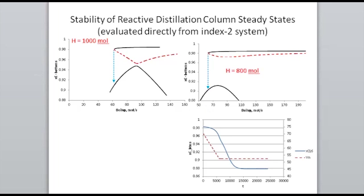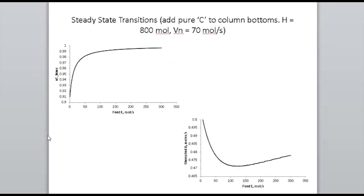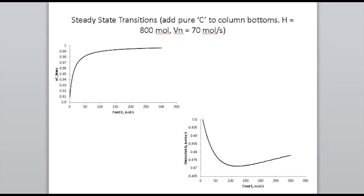Looking at the steady state picture as we introduce pure C into the bottom: in the top graph we do indeed achieve what we think we need — as we introduce C we increase the mole fraction of C in the bottom stream. But the more interesting bottom right graph tracks the moles of unreacted A: as we introduce C, this actually reaches a minimum and starts increasing again, so we are forcing the reaction — which is an equilibrium reaction — back to the left.